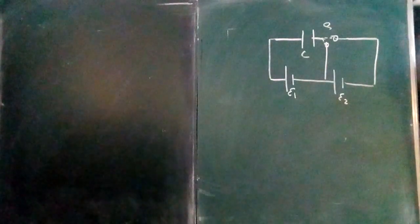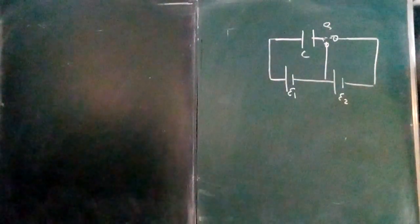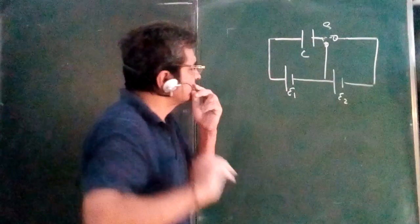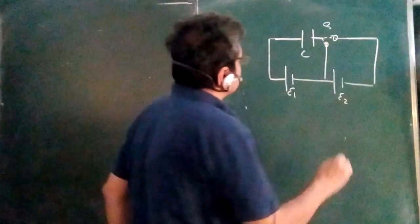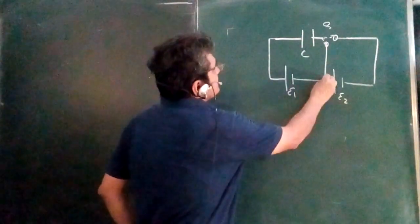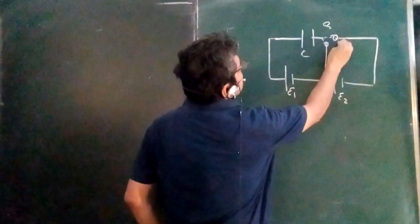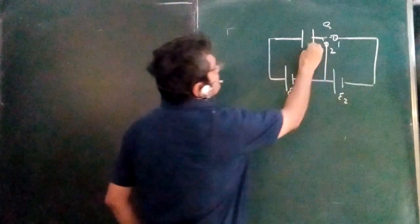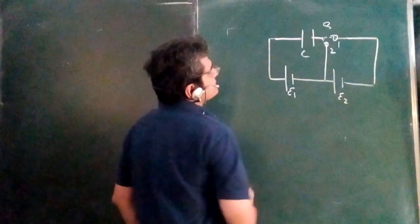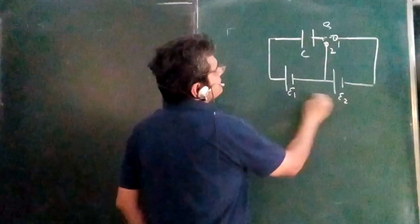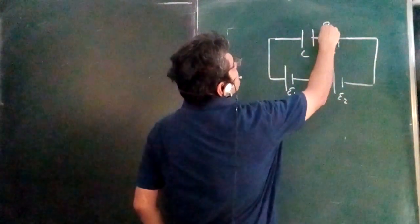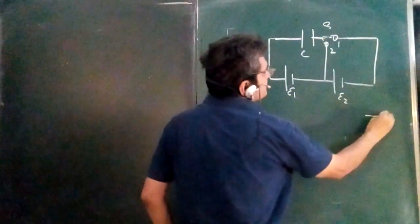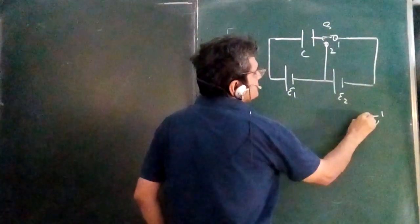This is a very interesting problem, taken again from Irodov. It helps us in clarifying some more concepts. Here in this system, there is a switch at point 1 and 2, a single capacitor, and two batteries with EMF E1 and E2. I shift the switch from position one to position two.